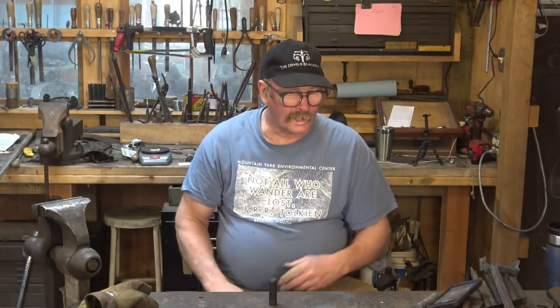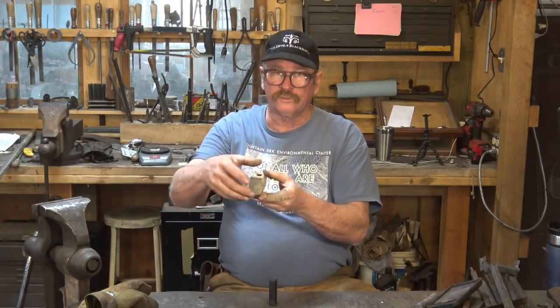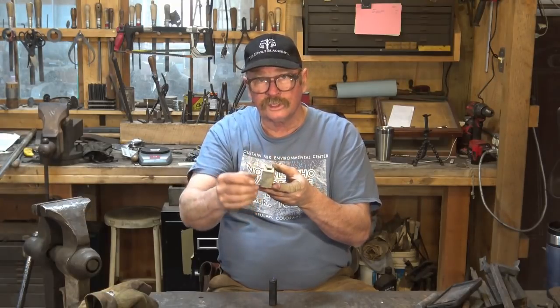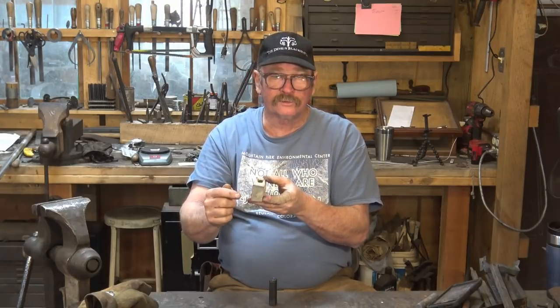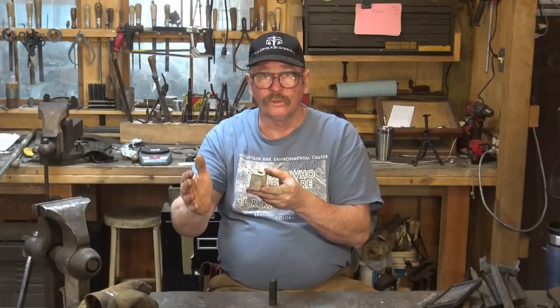When I make adzes, for instance, it's one of those things that I'm taking this taller dimension and I'm forging it down, and I frequently end up with a little cold shut down the edge. Absolutely unacceptable in the finished product. That's some place where I go ahead and grind that cold shut off.